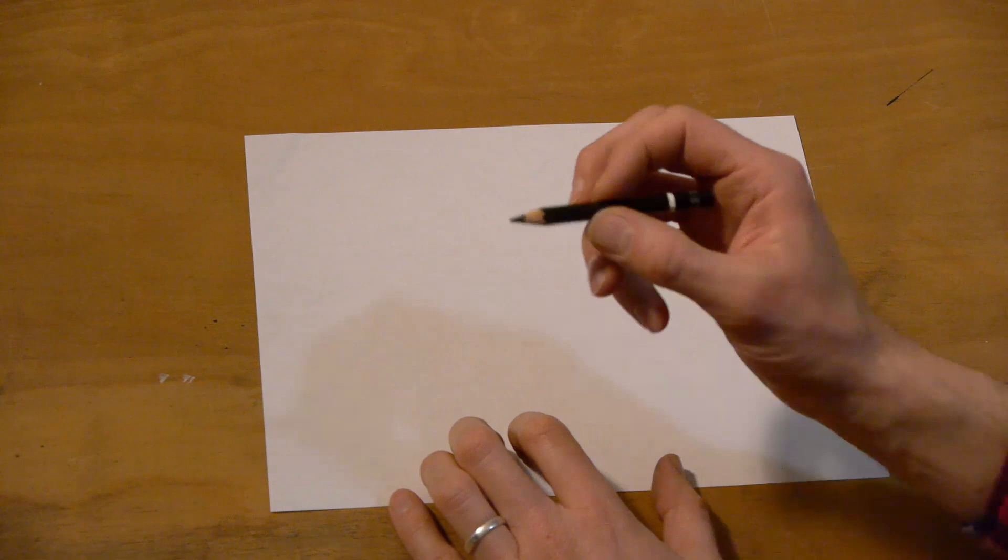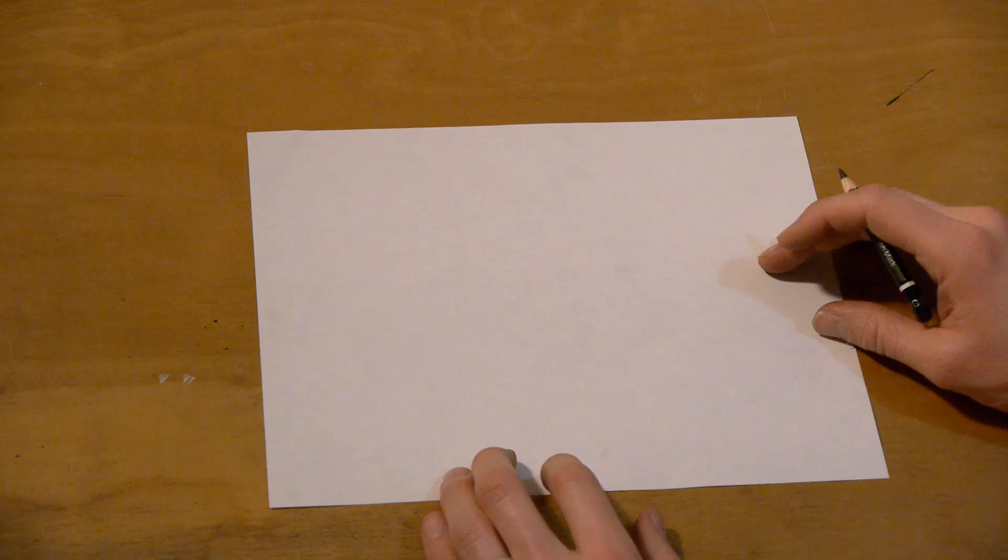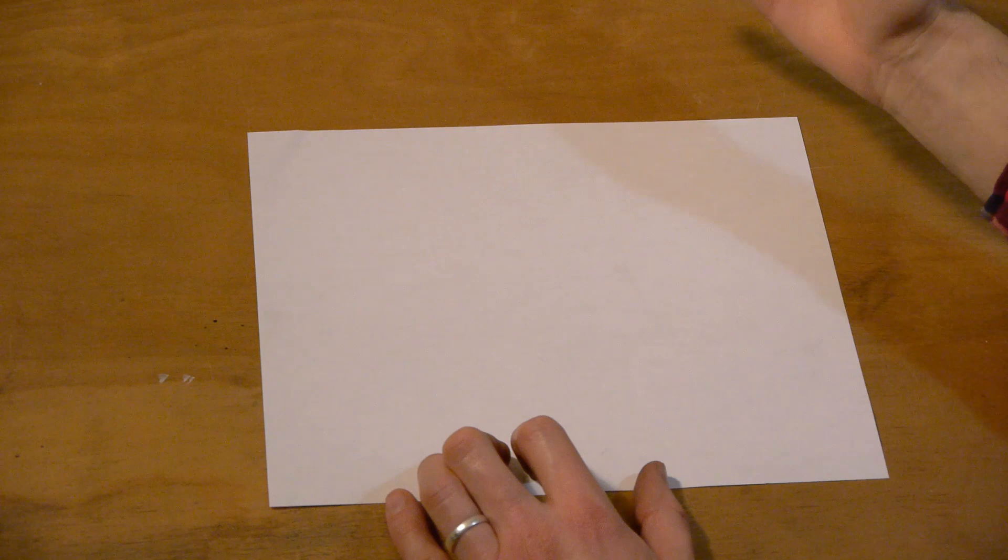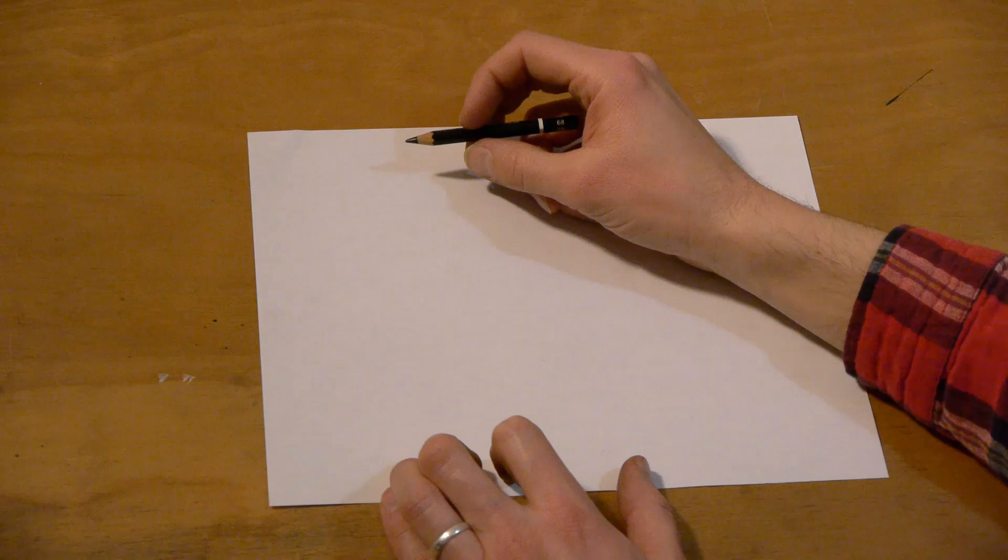I'm going to be using my 6B black pencil, but just a regular old HB pencil would work just fine. And just a regular piece of paper like this. And basically what shading is, is understanding the darks and the lights of an object that you're looking at. So it's coloring with your pencil. Dark and light. Those are called values.